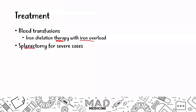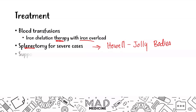What will you see after a splenectomy? Howell-Jolly bodies — that is very important, don't forget that. You're going to see Howell-Jolly bodies with a splenectomy. Finally, you can also give supportive therapy with folate.